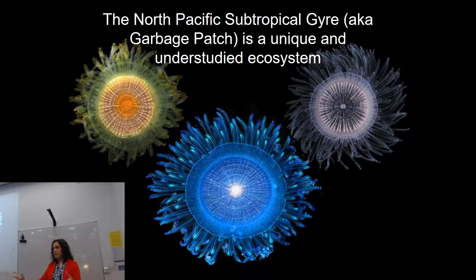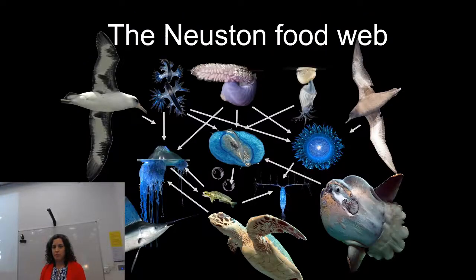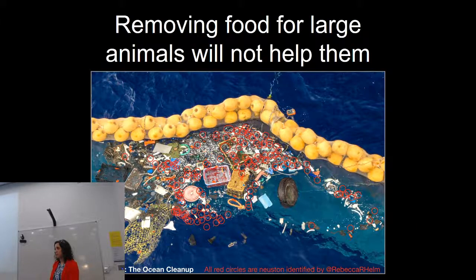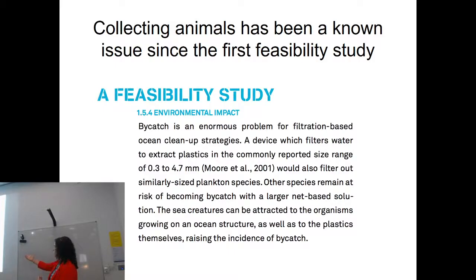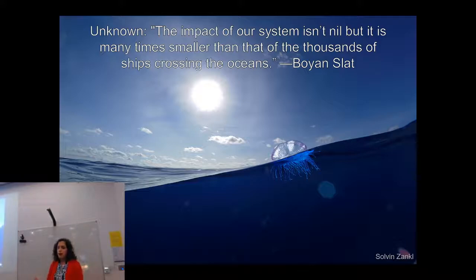I really want to drive home that the North Pacific subtropical gyre is a unique and understudied ecosystem. You can't just say plastics are harming turtles so we need to clean it up from the gyre — we don't actually have evidence that plastics are harming turtles in the gyre. We know very little about many of the animals there, and all of these other animals depend at least in part on them. If you're removing neuston from the environment, you may also be removing food for some of the animals you're ultimately trying to help.